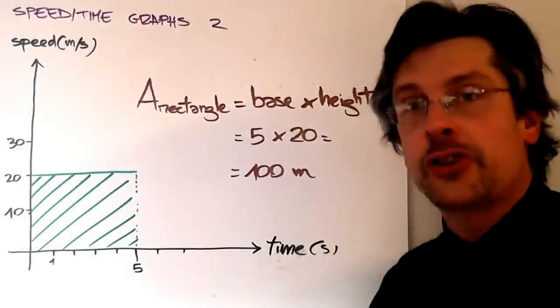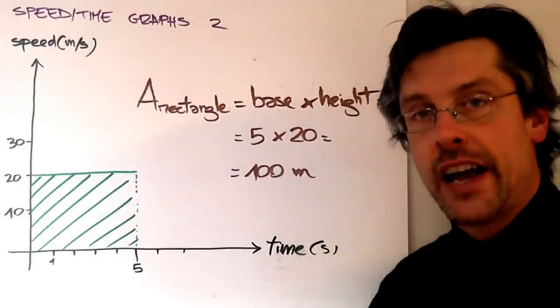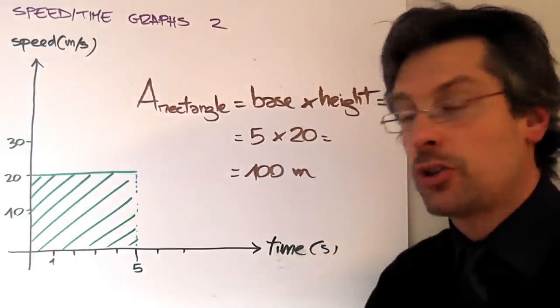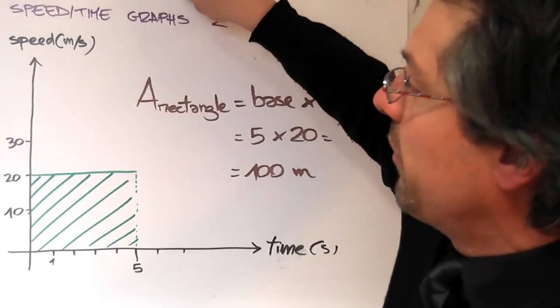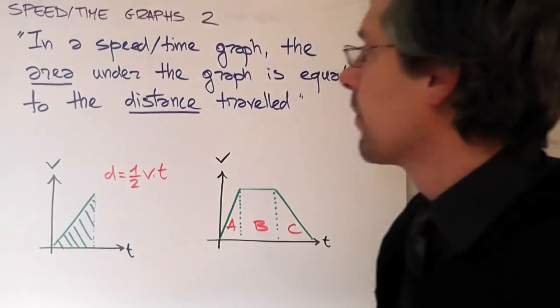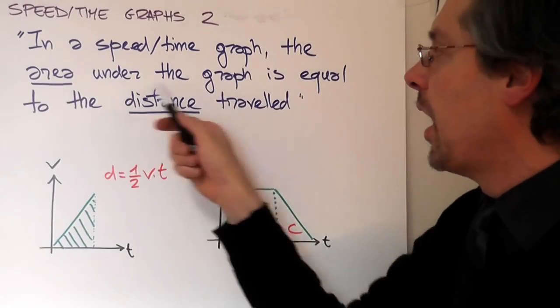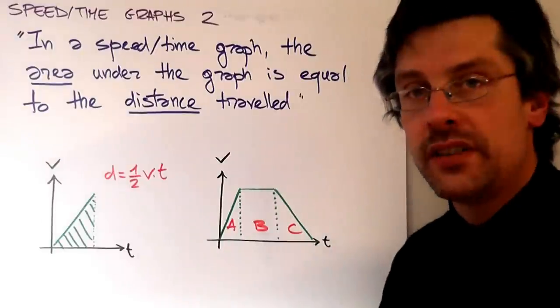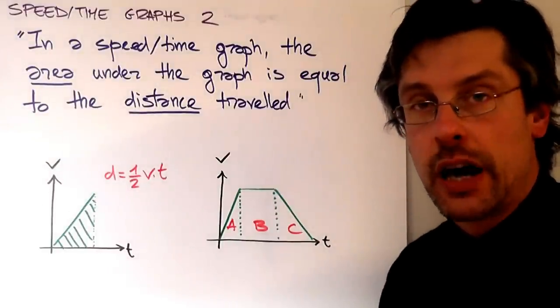Now I showed this example, this very simple example, that actually we can prove for any kind of shape. So what do we find here? That in a speed-time graph, the area under the graph is equal, is always equal to the distance traveled.